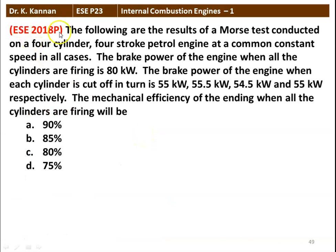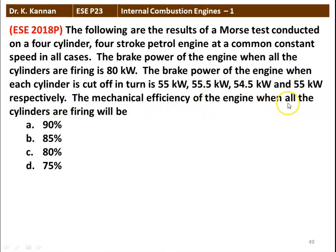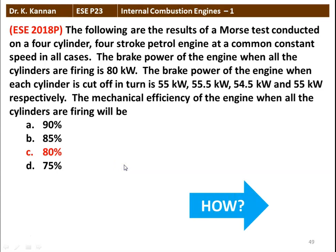The next question from the 2018 question paper: the following are the results of a Morse test conducted on a 4-cylinder, 4-stroke petrol engine at constant speed. The brake power when all cylinders are firing is 80 kilowatt. The brake power when each cylinder is cut off in turn is 55 kilowatt, 55.5 kilowatt, 54.5 kilowatt, and 55 kilowatt respectively. The mechanical efficiency when all cylinders are firing will be 90%, 85%, 80%, or 75%. The correct answer is 80%.